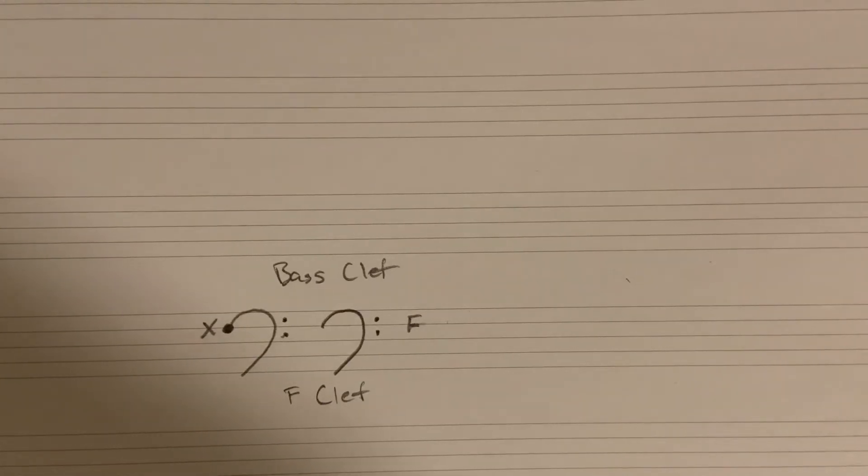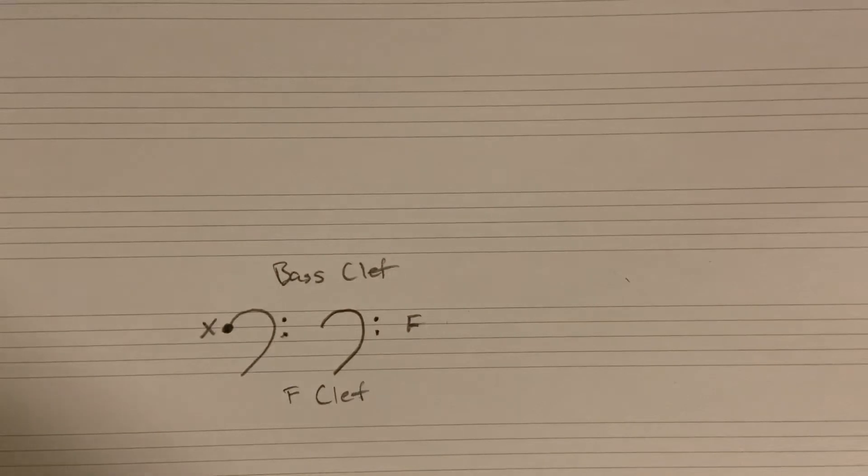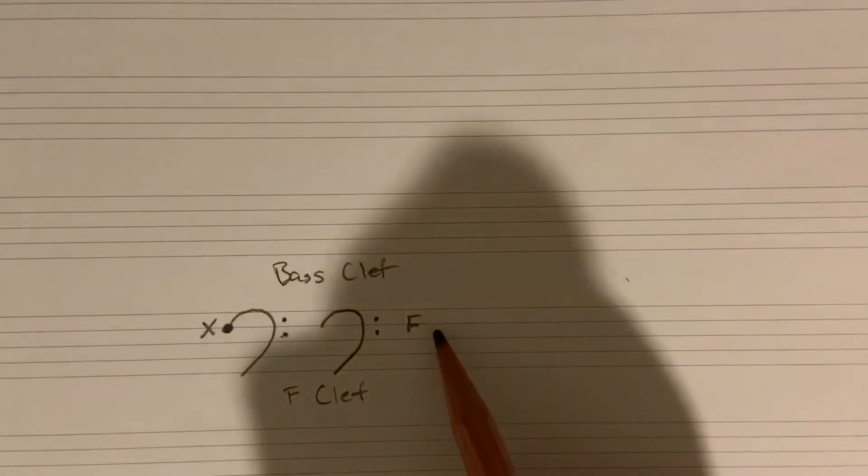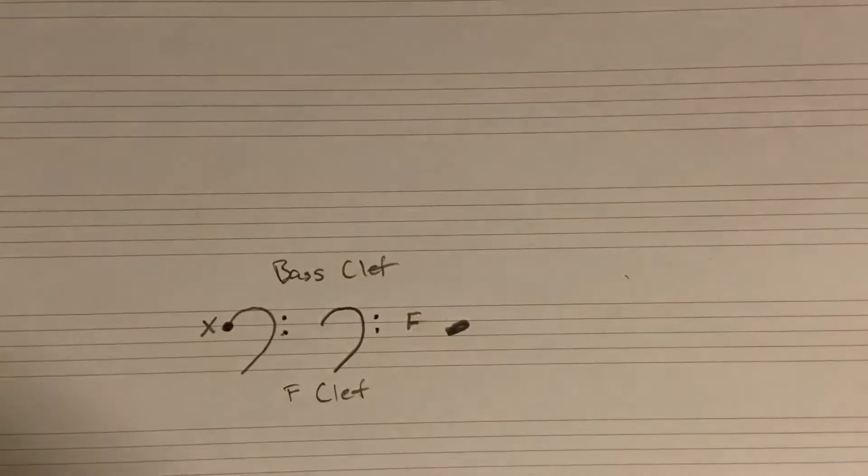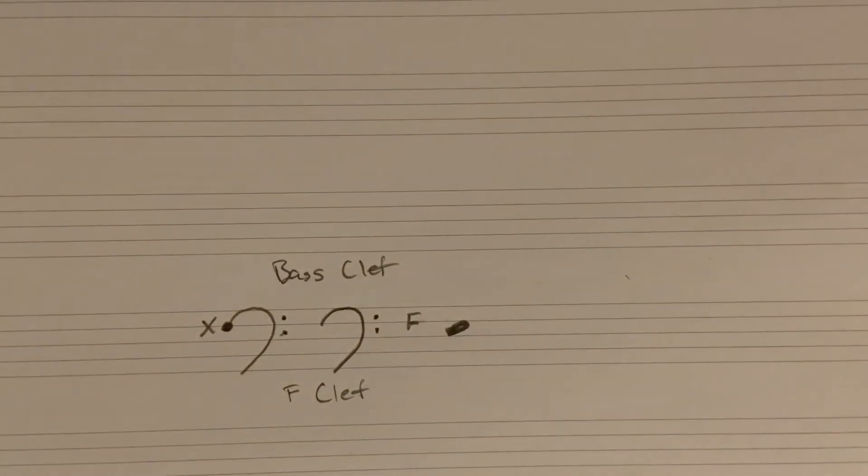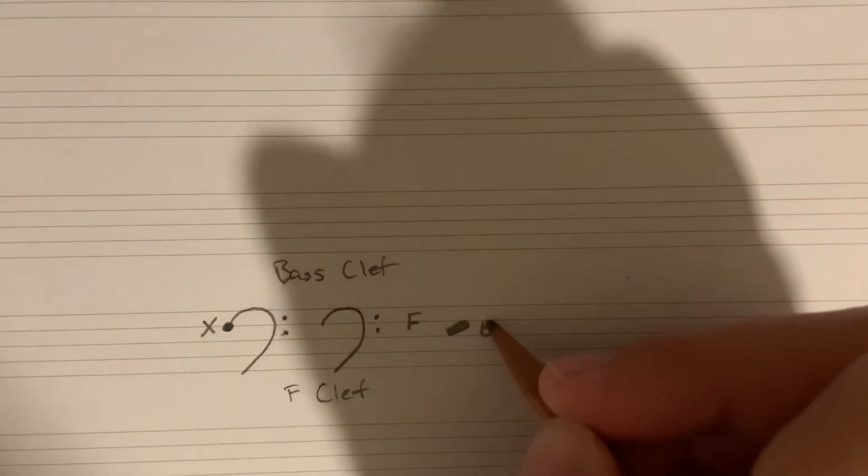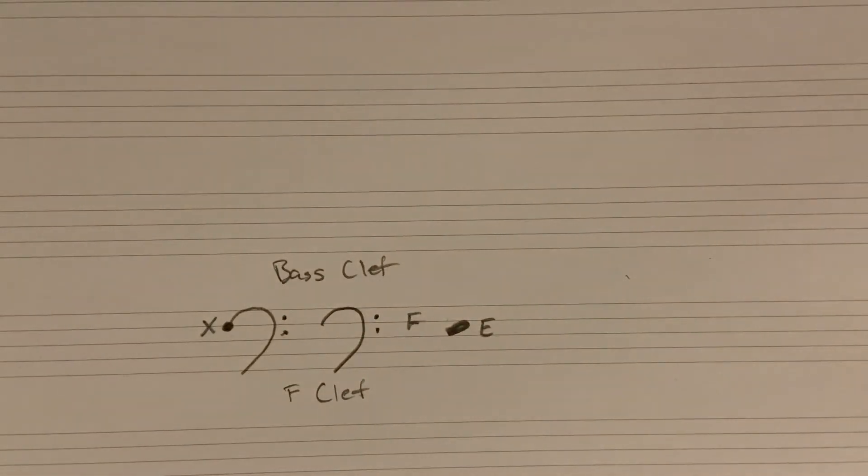Let's talk about where notes are placed. So obviously this line here is F. We know that. Let's see if we can find some other lines. Now, I want you to take a second. Pause the video if you need to. Take a second to see if you can figure out what the space just below F is. So that'll be this space right here. Actually, you know what, even better. I'll draw a note head. Try to see if you can figure out what note that is right there. Step below F. Alright, hopefully you came up with the note E. That's going to be our E.